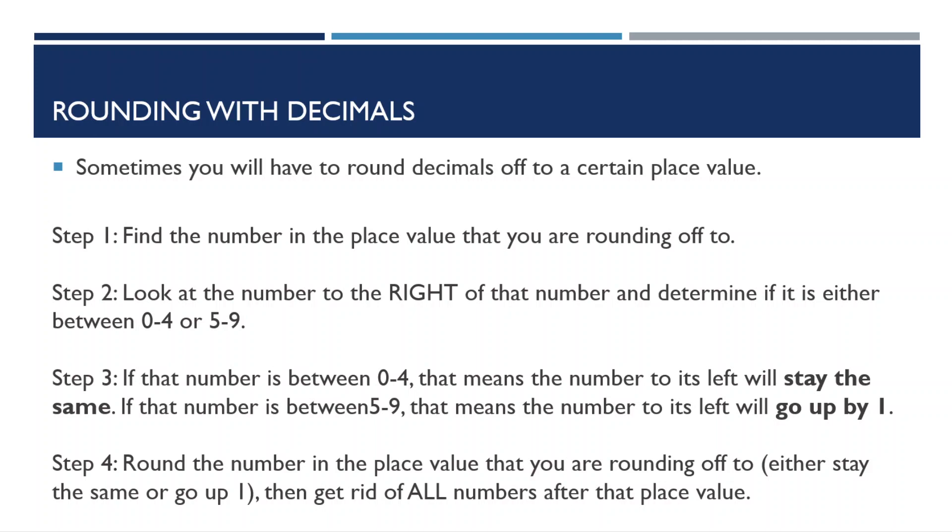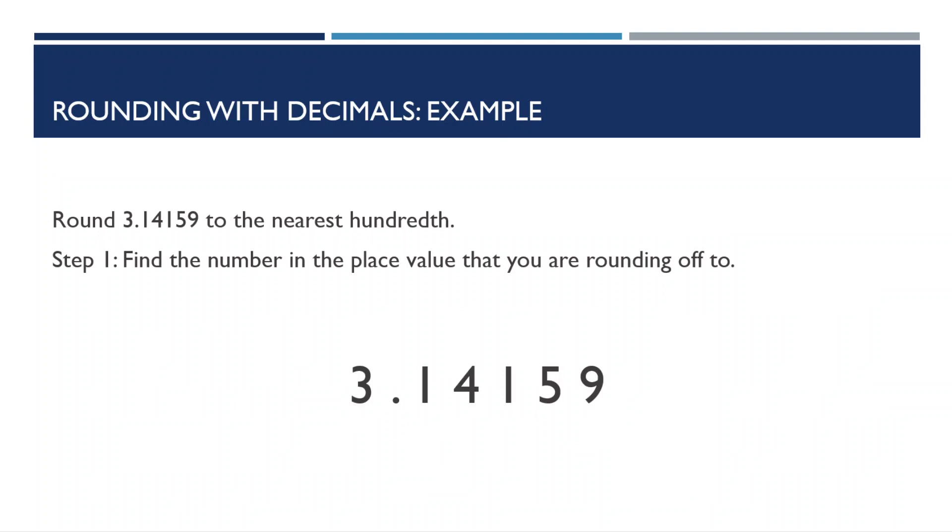If that neighboring number is between 0 and 4, that means the number to its left, the one in the place value you're rounding to, will stay the same. Or, if that number is between 5 and 9, the number to its left will go up by 1. Once you figure this out, round the number in the place value that you're rounding off to, which means it'll either stay the same or go up 1, then get rid of all the numbers after that place value.